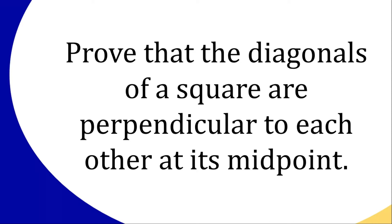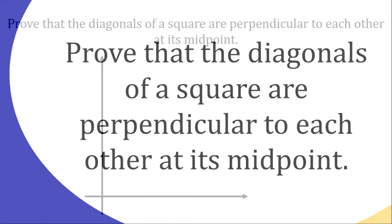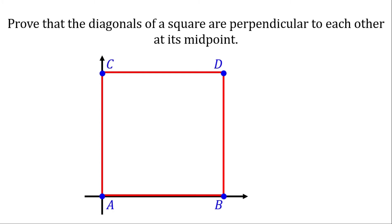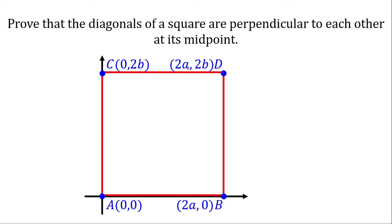Question 3: Prove that the diagonals of a square are perpendicular to each other at its midpoint. First we need to create a Cartesian plane and put a square on it. Name the vertices and put on the coordinates. This is a square, so all sides must be equal to each other. I could use 2A and 2A, or say that A equals B to make all sides equal.